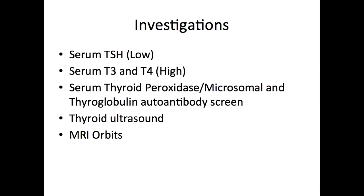As when investigating hypothyroidism, patients with hyperthyroidism should have serum thyroid function tests carried out. These would show a low TSH level with a raised serum T3 and T4 level. An autoantibody screen for serum microsomal and thyroglobulin antibodies should be carried out, since these are present in most cases of Graves' disease. Thyroid ultrasound will be able to distinguish a goiter due to Graves' disease compared to that due to a toxic adenoma. In patients with suspected Graves' disease, it is also important to carry out an MRI of the orbits to exclude other possible causes of proptosis, such as a retroorbital tumour.